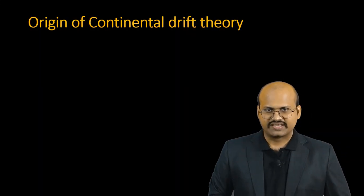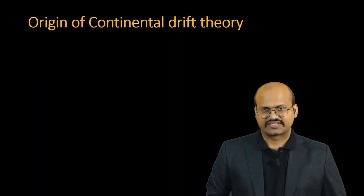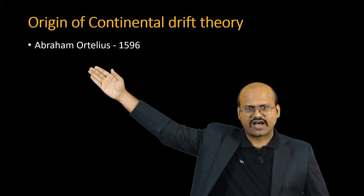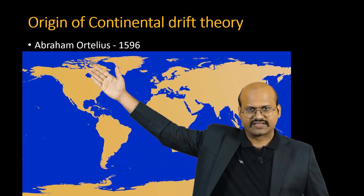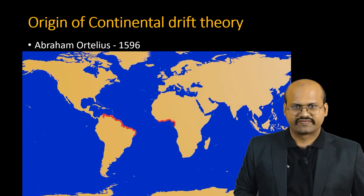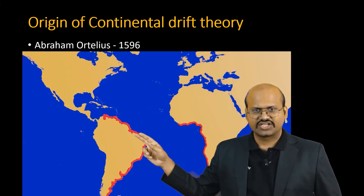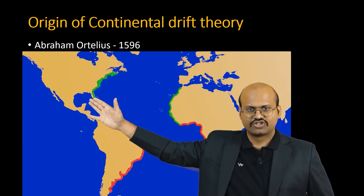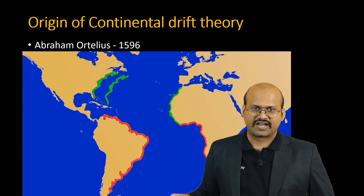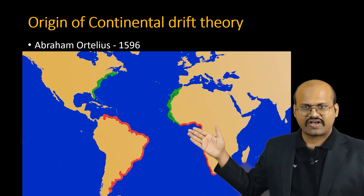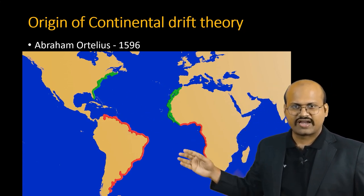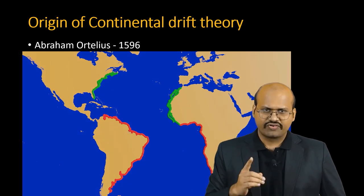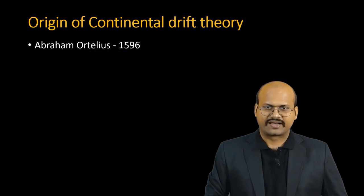The origin of this theory can be traced as far back as 1596 to Abraham Ortelius. Ortelius observed that the eastern coastlines of South America and North America showed great similarity with the western coastlines of Africa and Europe, as if both were pieces of one single land block.